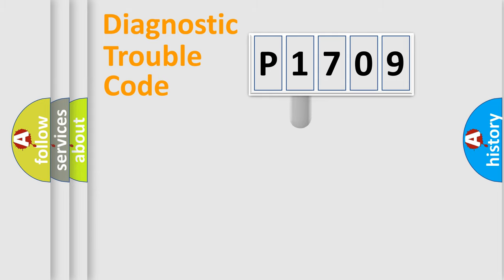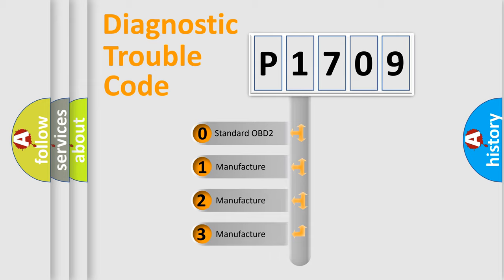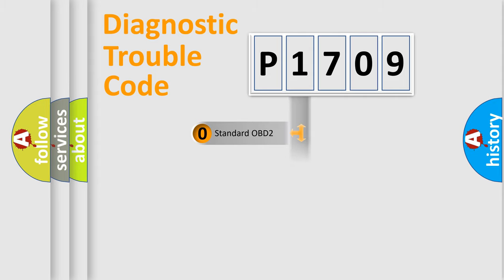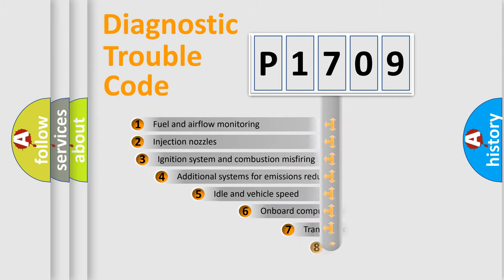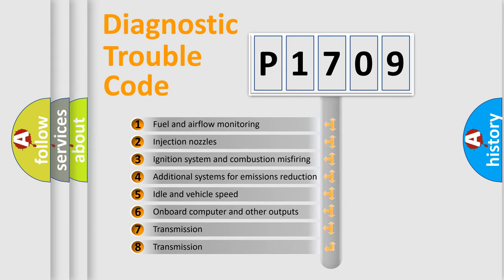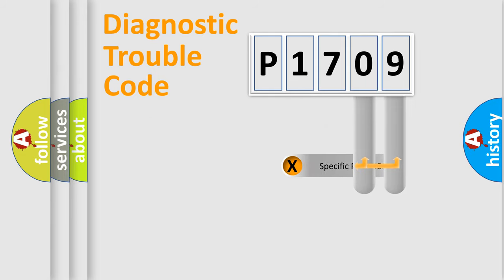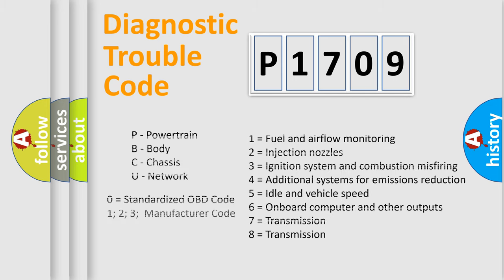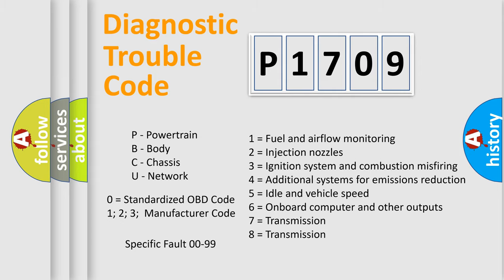This distribution is defined in the first character of the code. If the second character is expressed as zero, it is a standardized error. In the case of numbers 1, 2, or 3, it is a more specific expression of a car-specific error. The third character specifies a subset of errors. Only the last two characters define the specific fault of the group, and this division is valid only when the second character is zero.